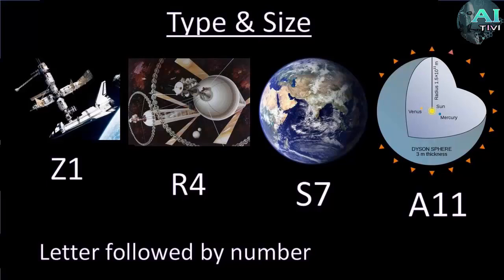So type and size will be combined as follows. Z1 would be a zero gravity environment about 10 meters across like the space station. A large rotating habitat several miles long would be a R4. Something the size of the earth and almost all of the planets you'd normally associate as being a planet that you could live on would be a S7 indicating a spherical gravity and is about 10,000 kilometers or 10 million meters across. And then an A11 would be something with artificial gravity about the size of Earth's orbit around the sun like a Dyson sphere.